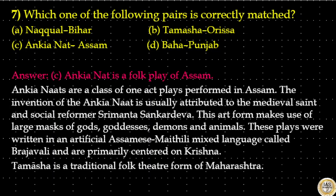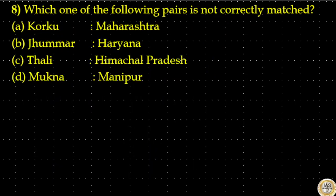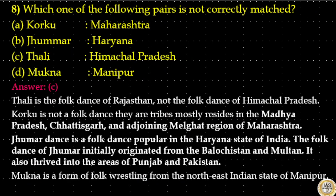Tamasha is a traditional folk theatre form of Maharashtra. The next question: which one of the following pairs is NOT correctly matched? Option A: Korku — Maharashtra (correct). Option B: Jumar — Haryana (correct). Option C: Tali — Himachal Pradesh (not correct). Option D: Mukna — Manipur (correct). So the answer is option C: Tali. Tali is the folk dance of Rajasthan, not of Himachal Pradesh.